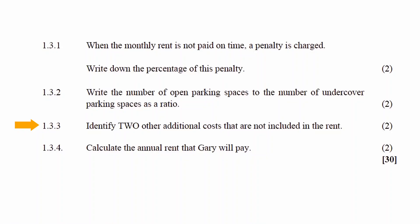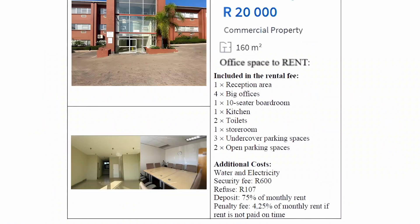In question 1.3.3, you have to identify two other additional costs that are not included in the rent. Additional costs that are not included in the rent are water, electricity, refuse, security fee, and parking. Any two of these costs are acceptable answers.